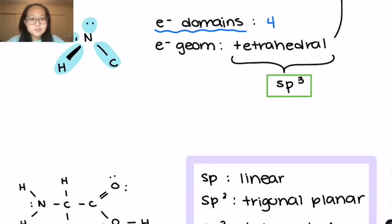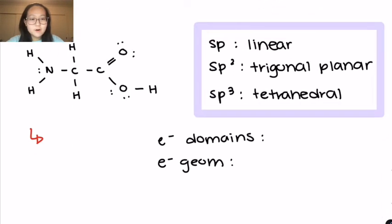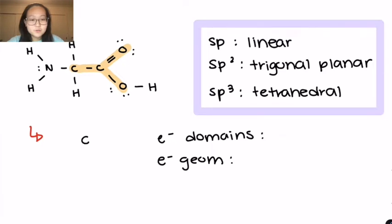Now moving on to the carbon, the far right carbon, which I'm going to highlight for you in orange. And I'm going to again draw the simple skeletal structure.